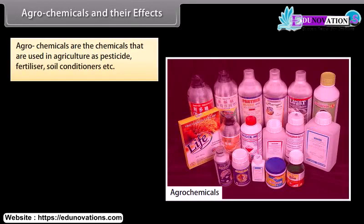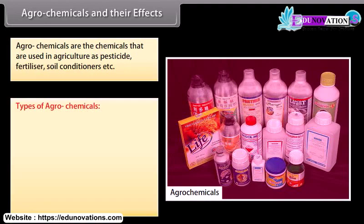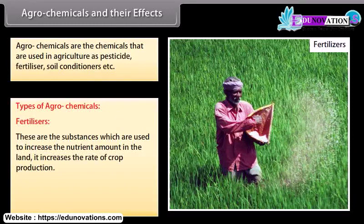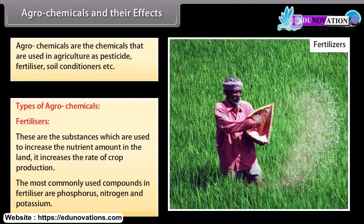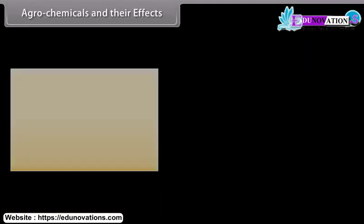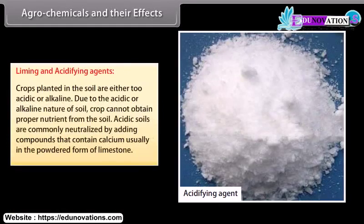Agrochemicals are chemicals used in agriculture as pesticides, fertilizers, soil conditioners, etc. Fertilizers are substances used to increase the nutrient amount in the land, increasing the rate of crop production. The most commonly used compounds in fertilizers are phosphorus, nitrogen, and potassium. Liming and acidifying agents are used when crops are planted in soil that is either too acidic or alkaline. Acidic soils are commonly neutralized by adding compounds containing calcium, usually in the powdered form of limestone.